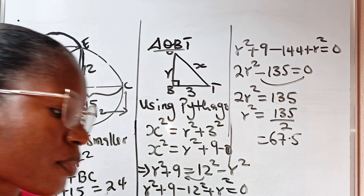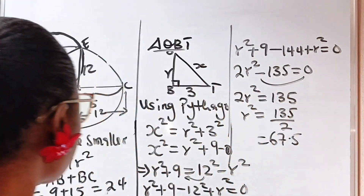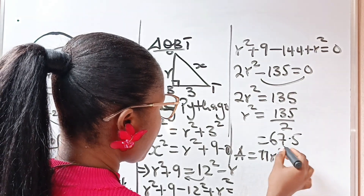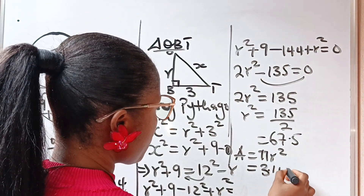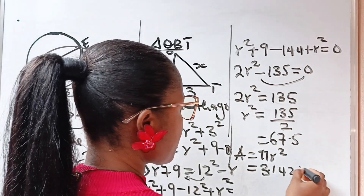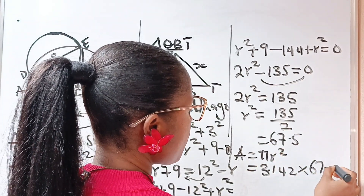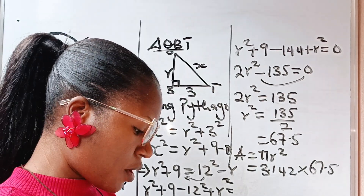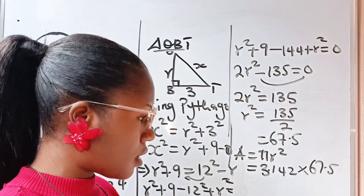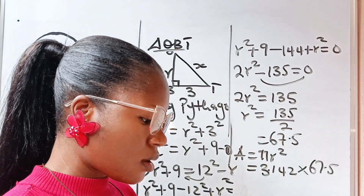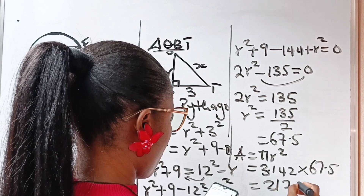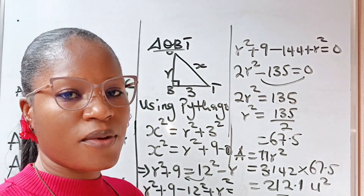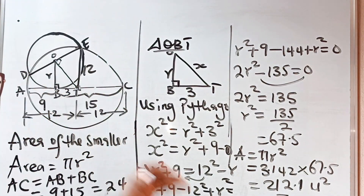Remember that area equals π R squared. I don't need to find R separately. So area equals π times R squared, which is approximately 3.142 times 67.5. Multiplying that gives us approximately 212.1 square units. And that is the area of the smaller circle. Thank you so much for watching.